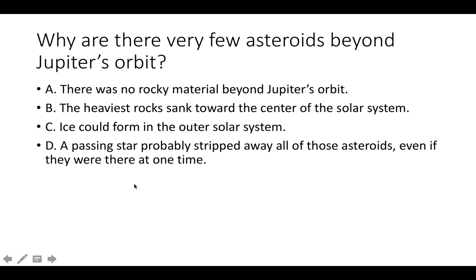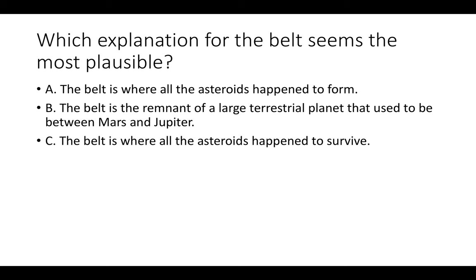Why are there very few asteroids beyond Jupiter's orbit? The correct answer is C. Remember the frost line — it's in between Mars and Jupiter. Everything inside Mars tends to be terrestrial, and everything beyond that can be gas. A few asteroids beyond Jupiter's orbit because ice could form in the outer solar system, and those objects would not be classified as asteroids. As for which explanation for the belt seems most plausible, the correct answer is also C — it's the mid-distance point where asteroids from our solar system's formation have survived.